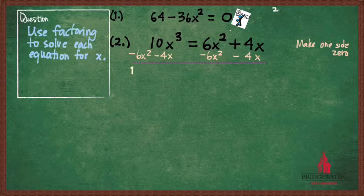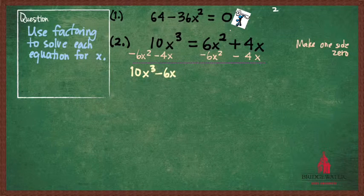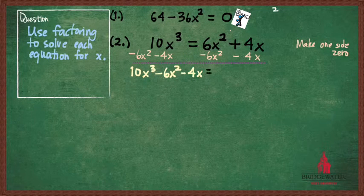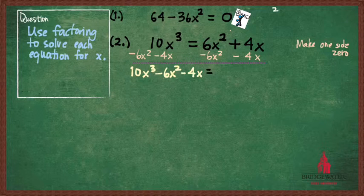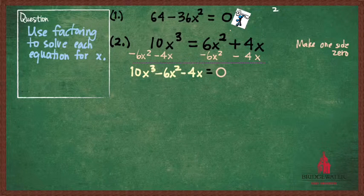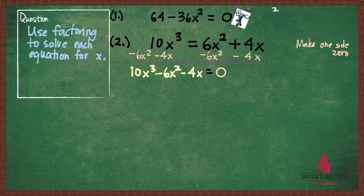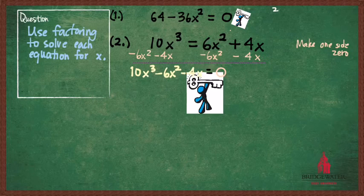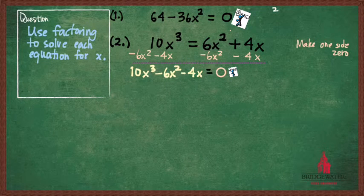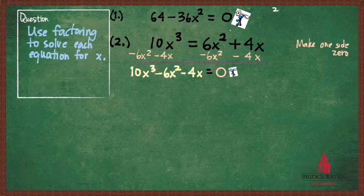So the left-hand side of my equation is then 10x³ - 6x² - 4x, and the right-hand side of my equation is the all-important zero, without which we can do nothing when it comes to factoring and solving equations.